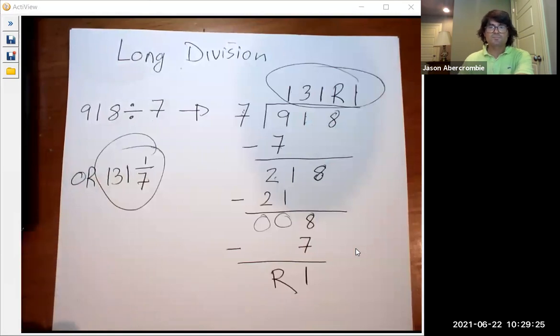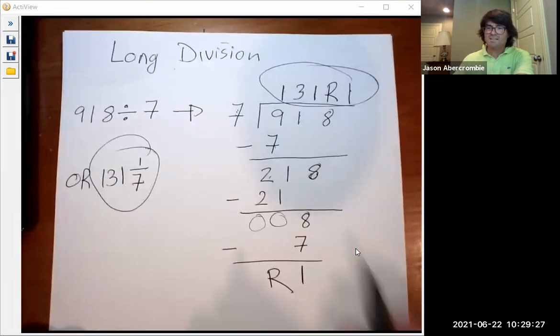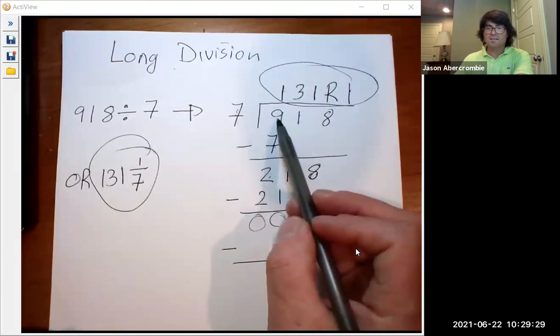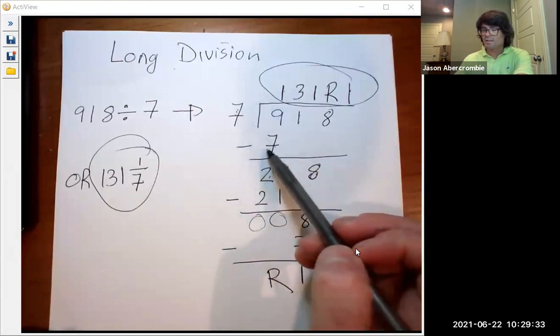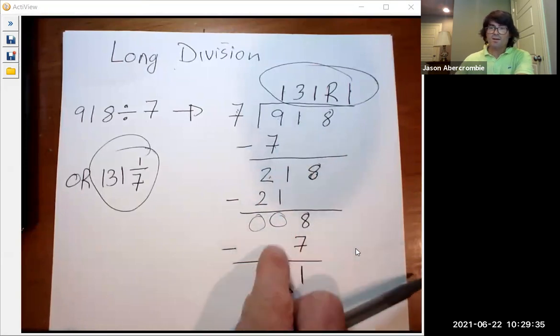Let's try another problem. The key is asking the question, does seven go into this? If yes, write down your answer and subtract. If it doesn't, then you have to bring down an extra digit. Let's do another one.